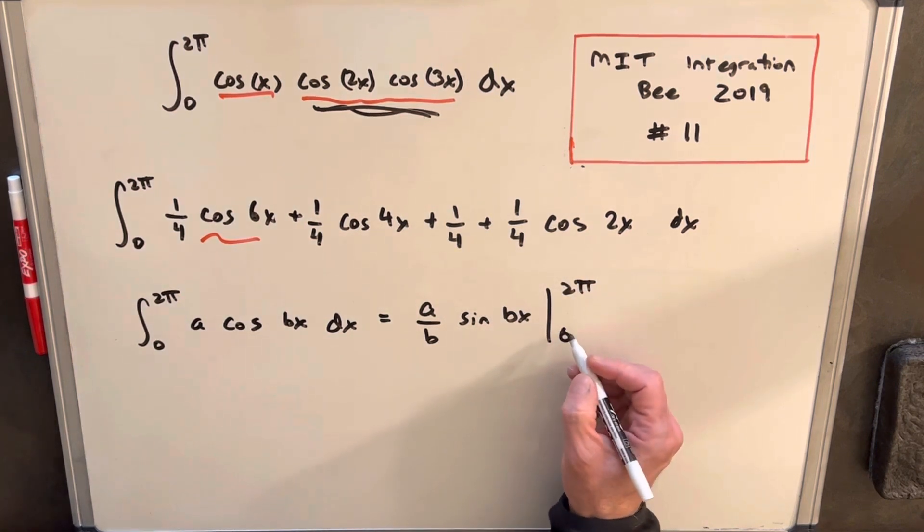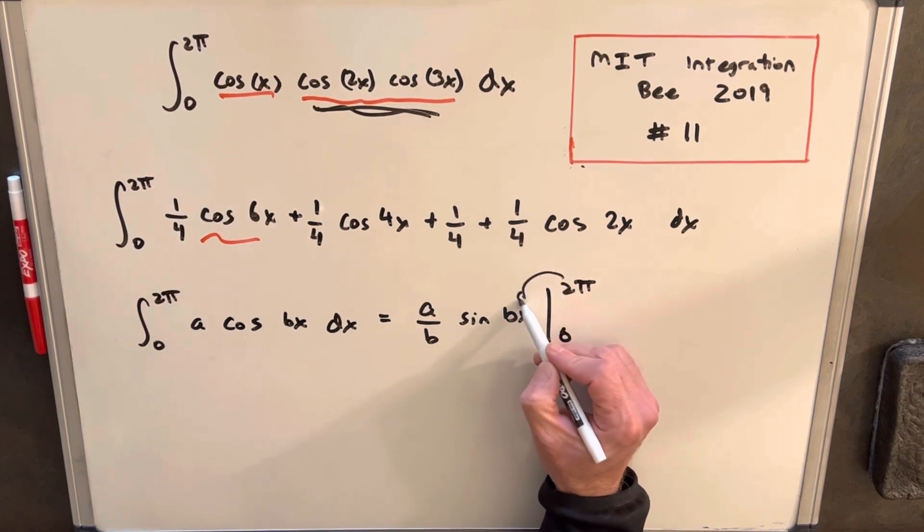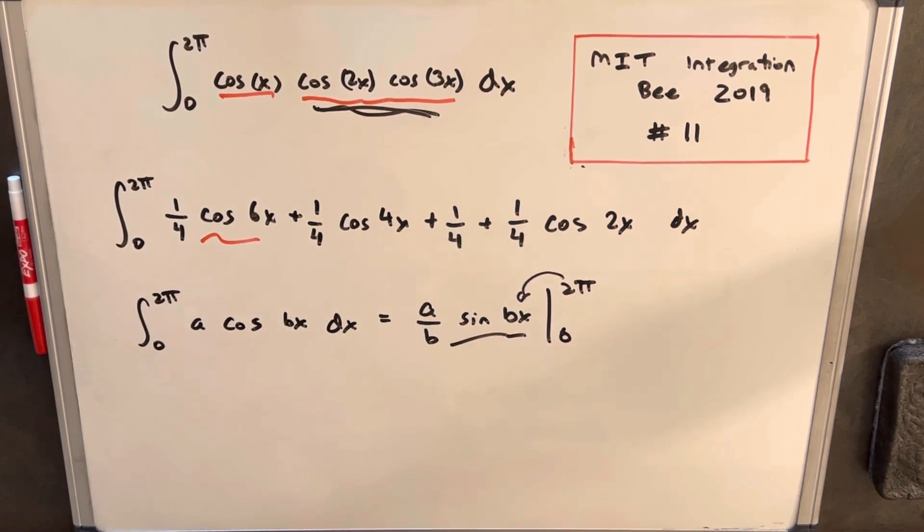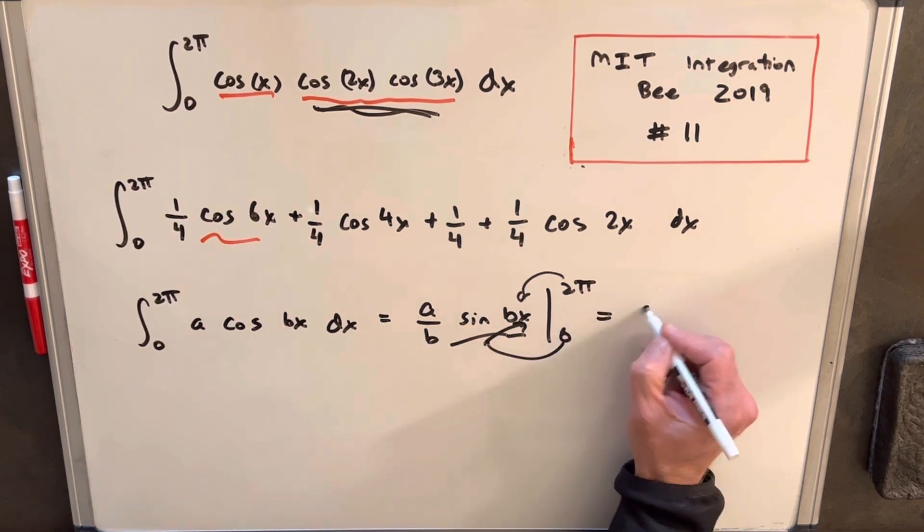And then what I want to notice is when we plug our 2 pi in for the angle, this is always going to be 0. And then again, when we plug in 0 for the x, again, it's going to be 0. So this integral in every case is going to be 0.